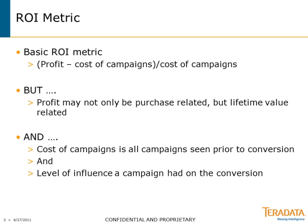We all know cases where I can acquire a customer — that's a good conversion event. But that customer may not do many transactions, so they're not very valuable. That's one dimension we ultimately want to beef up to improve the ROI metric. The other dimension is the campaigns themselves. I want to know the cost of all the campaigns seen prior to the conversion event — not just the last click, but the cost of every one of those campaigns. Even more complex: ultimately, I want a weighting scheme for every impression, to say the cost plus that weight is the influence that the campaign had on the conversion.